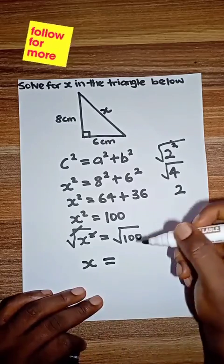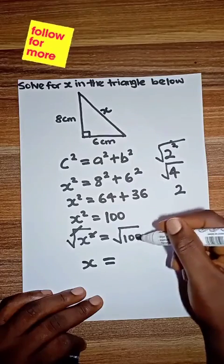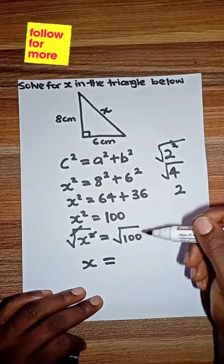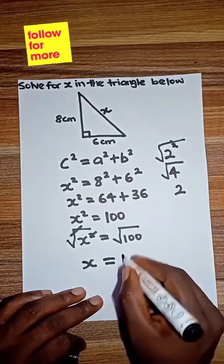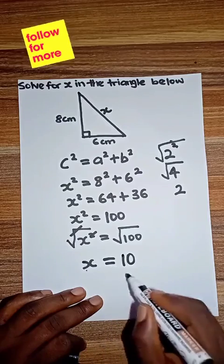So √100 is 10. Square root means what will multiply itself to give you that number, right? So 10 × 10 will give you 100, so √100 = 10. This means that x = 10. This becomes the answer.